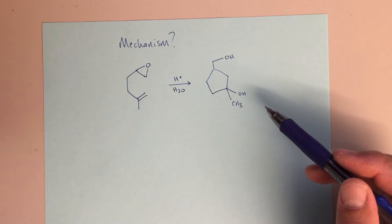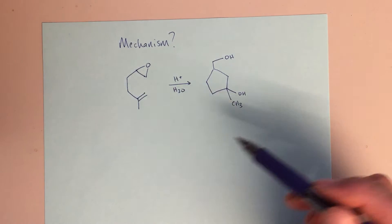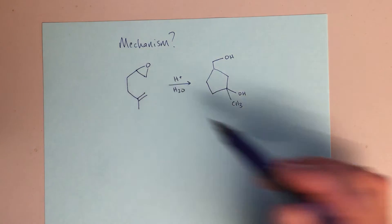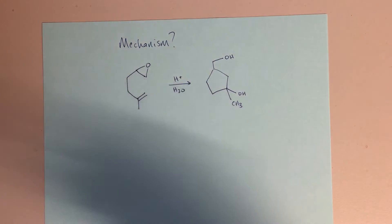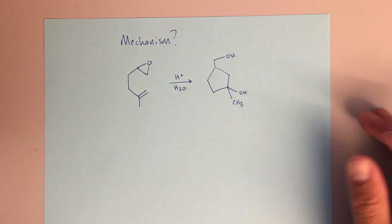So right away we're looking at closing the ring, there's going to be some sort of attack on the epoxide, and we're acid catalyzed. So let's just sort of start going through what mechanism we can think of here.